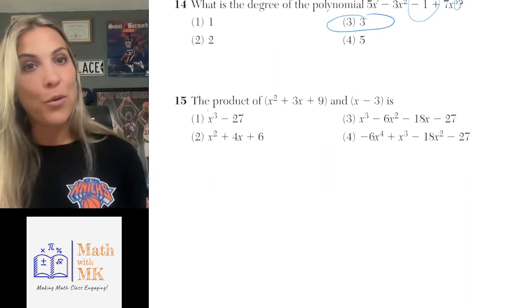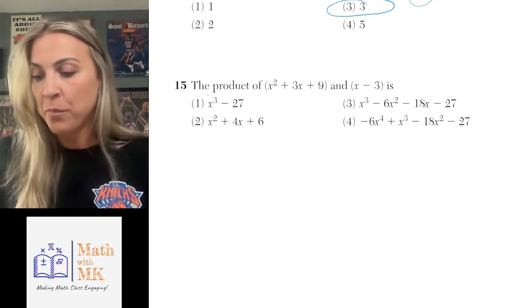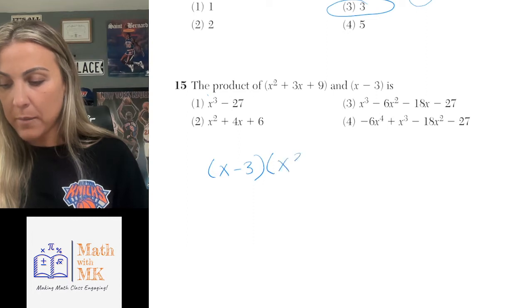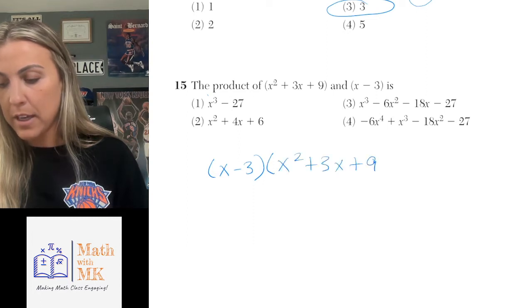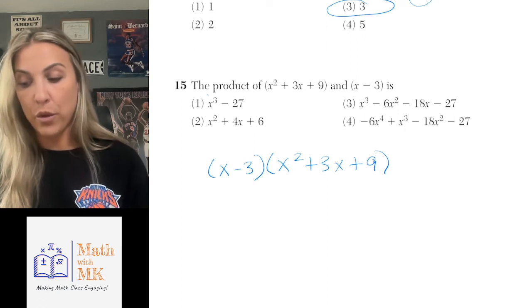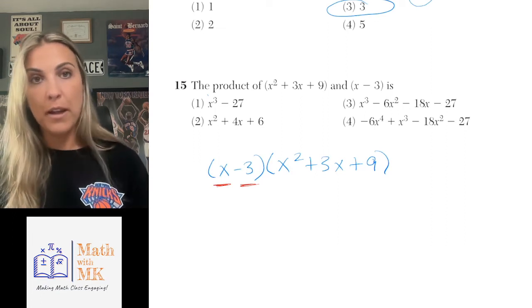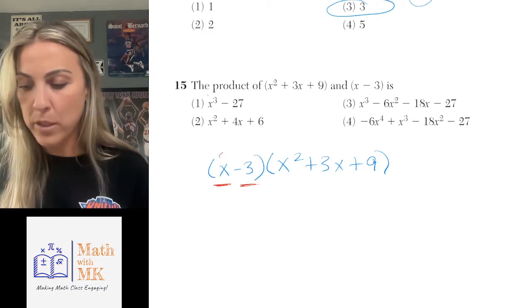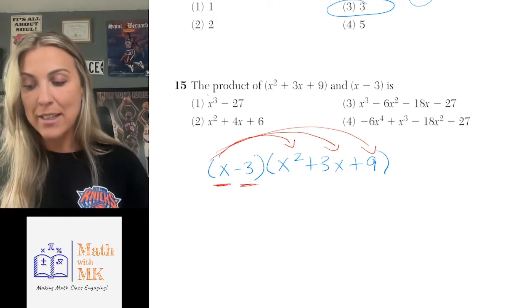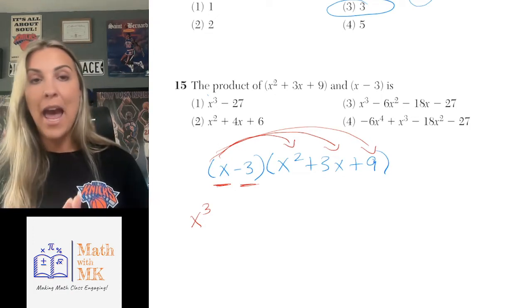Number 15 says to find the product — product means multiplying. I like to write the shorter polynomial first, so I'm rewriting this as x minus 3 times x squared plus 3x plus 9. This is like FOIL with one extra step — you have to make sure that every term in the first parentheses gets multiplied by every term in the other parentheses. I have two terms: x and negative 3.